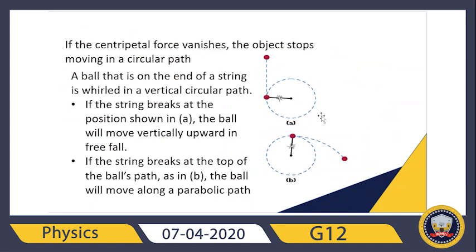To summarize: if we have centripetal force, the object keeps moving in a circular path. If the centripetal force is removed, the object will move in a straight line and no longer follow a circular path. That's all for today — see you next session, good luck!